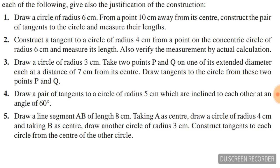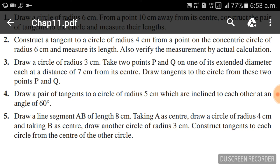Question number two: construct a tangent to a circle of radius 4 cm from a point on the concentric circle of radius 6 cm. Measure its length and also verify the measurement by actual calculation.